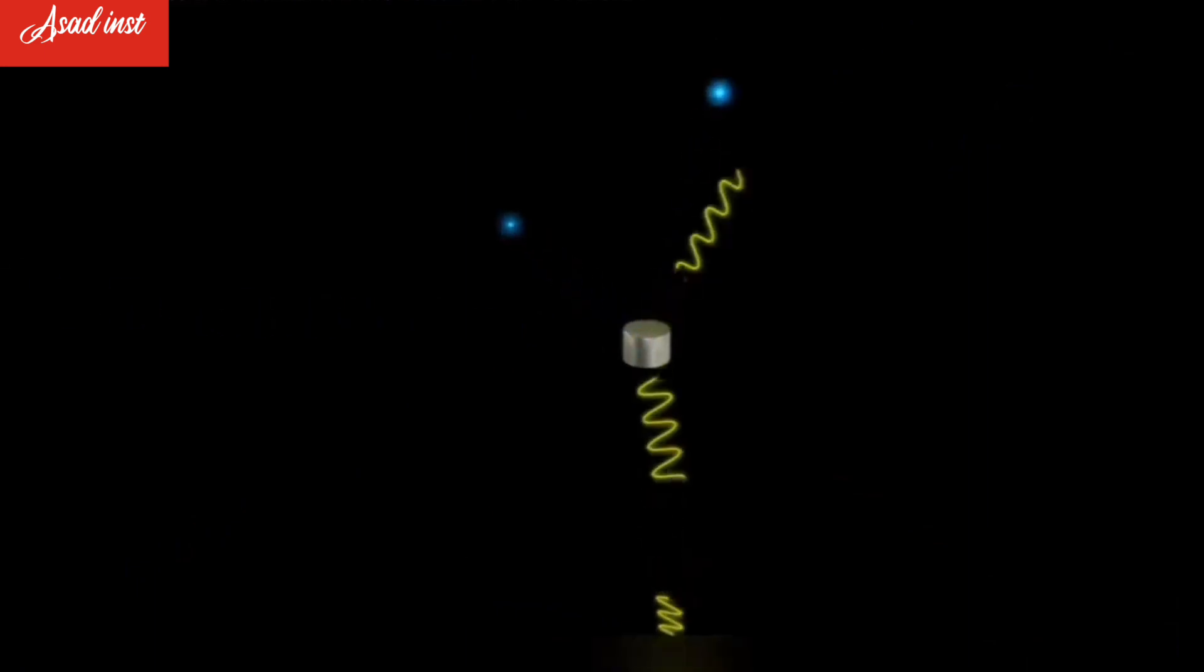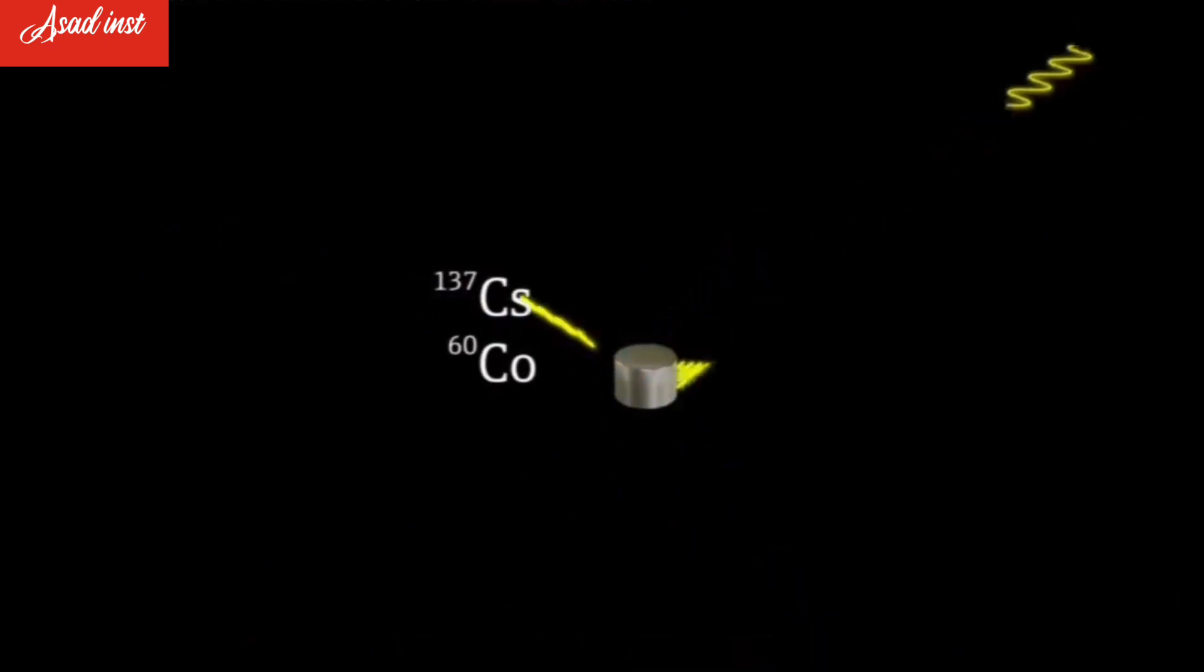Alpha and beta radiation are particle radiations. Gamma radiation is an electromagnetic wave. In industrial instrumentation, cesium-137 or cobalt-60, which only emit beta and gamma radiation, are mostly used as radioactive isotopes.